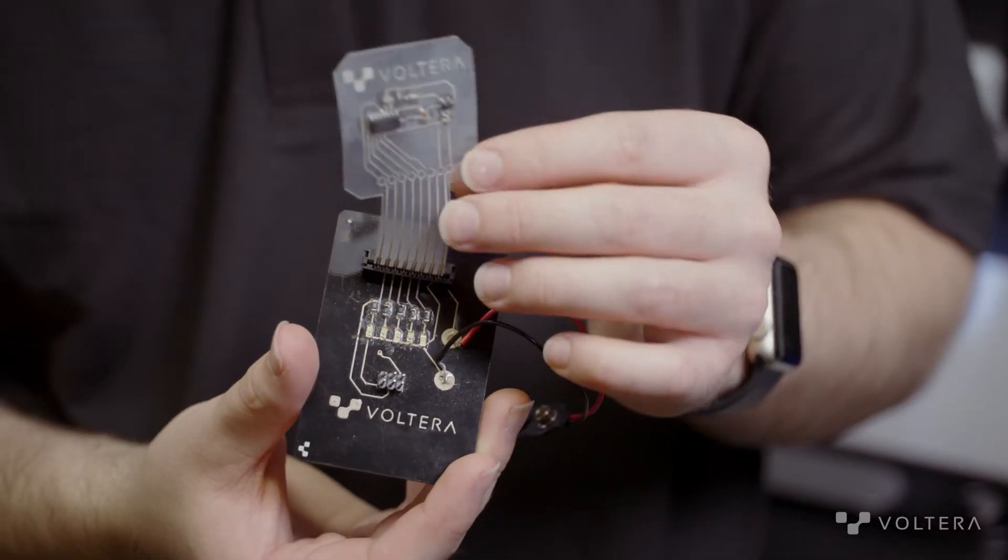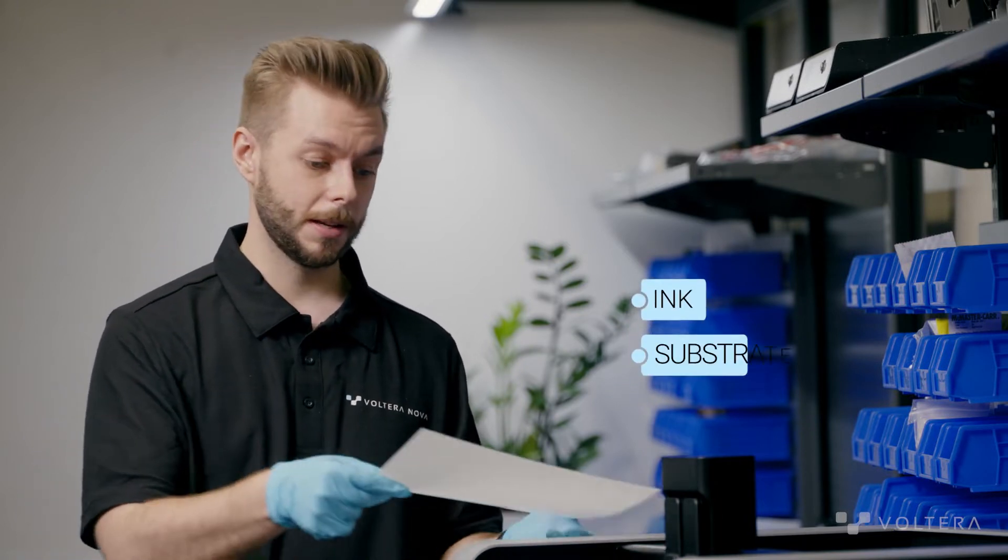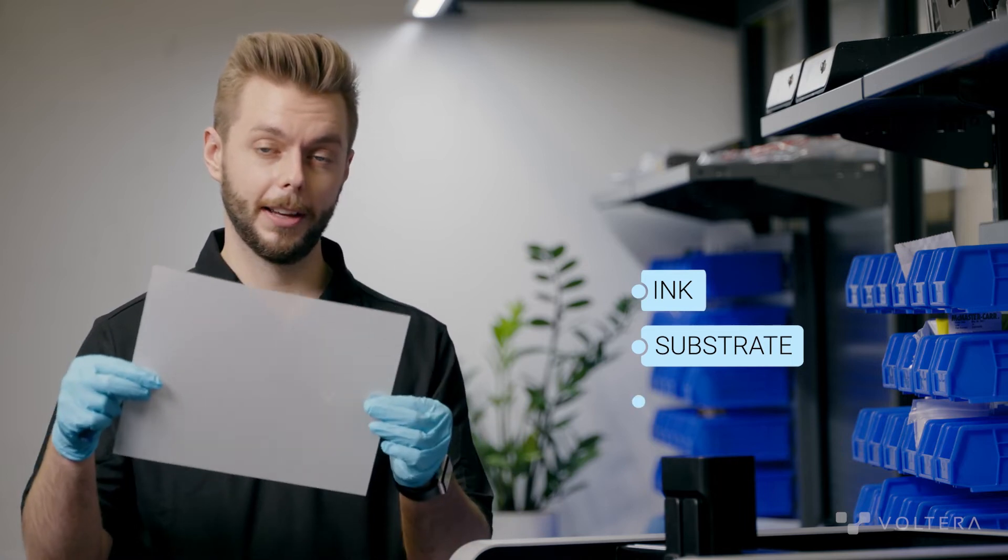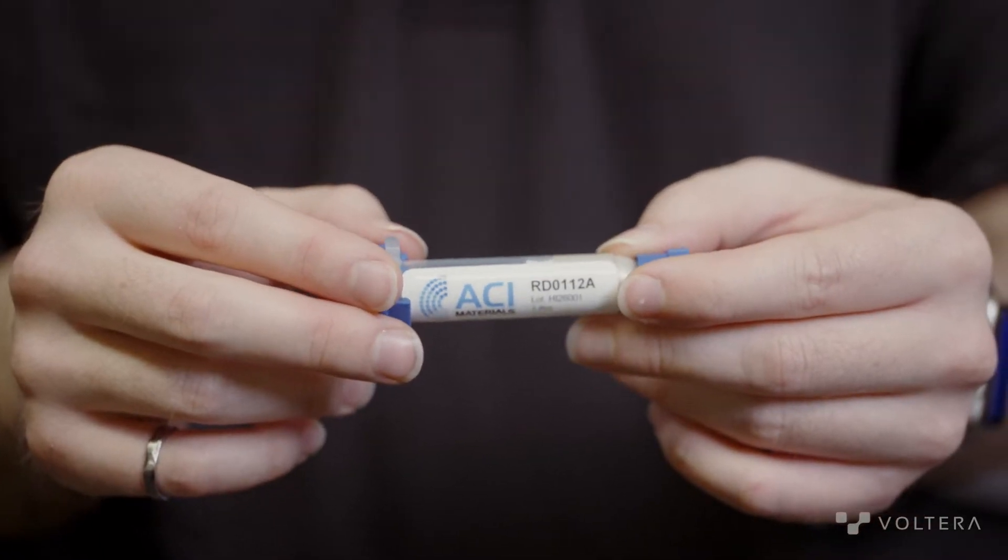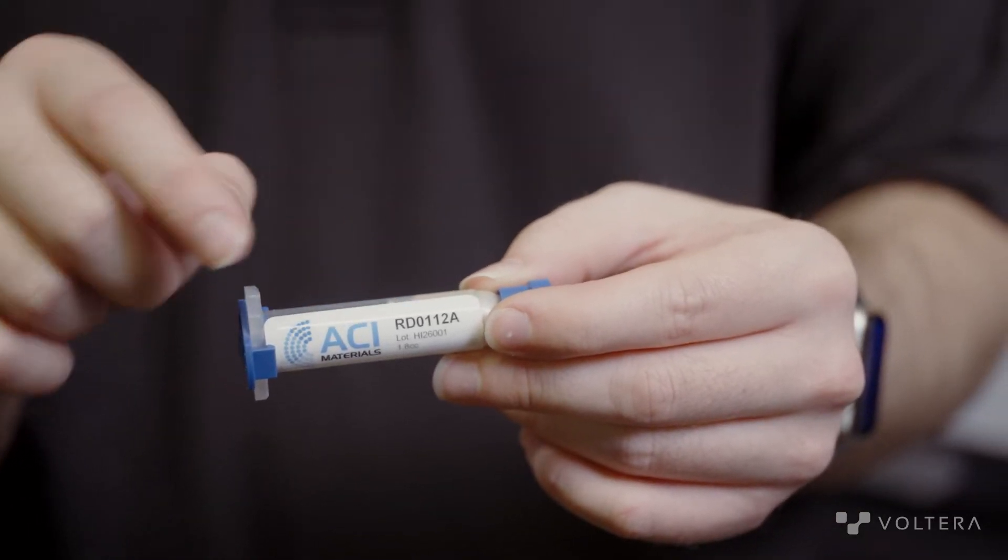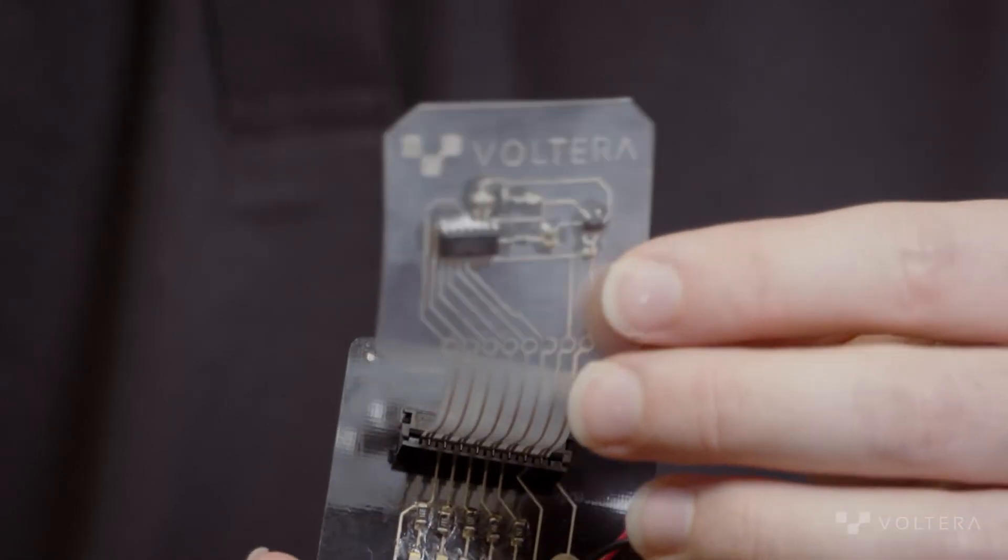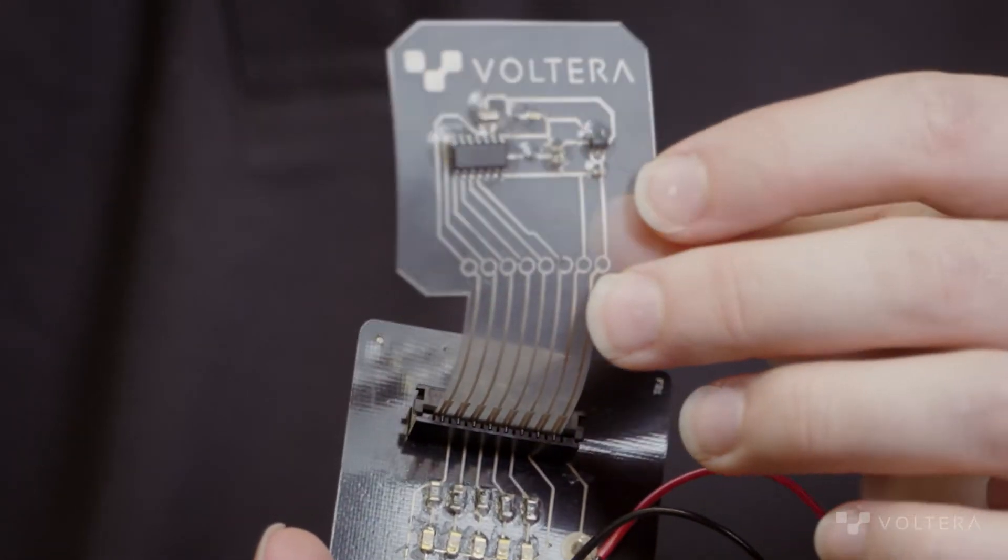We'll be printing a flexible Arduino electronic circuit. For the dispense procedure, you're going to need an ink that you want to print, a substrate that you want to print on, and a design file. For this project, our ink will be the ACI RD0112A, which we calibrated in the last video. Our substrate will be this heat-stabilized coated PET film from Norman Decoding.